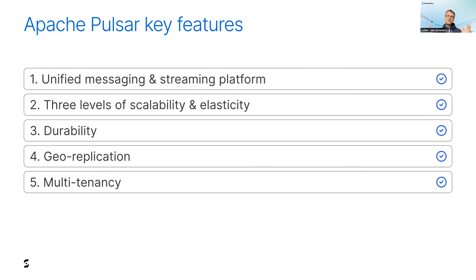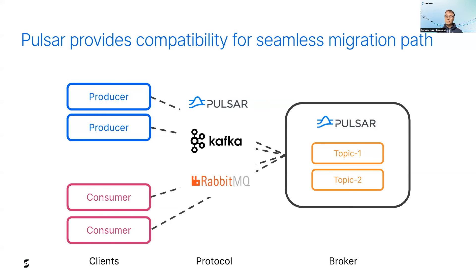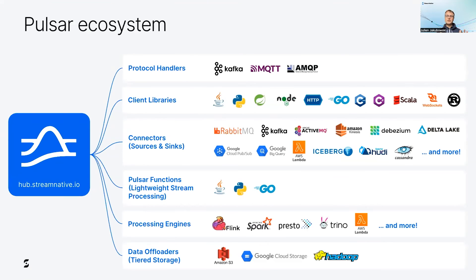You may have applications already using Kafka and can't afford to rewrite all of them. Well, I have good news: Pulsar has a high level of compatibility. Messaging and streaming involve clients and a broker that communicate using a protocol. Pulsar provides its own binary protocol, but with the addition of protocol handlers, Pulsar becomes compatible with Kafka clients, RabbitMQ clients, and MQTT clients. By leveraging your existing apps, you can avoid the need to rewrite everything and ensure a seamless migration path. Check out hub.streamnative.io where you'll find a wide ecosystem around Pulsar — connectors, libraries, protocol handlers, and more.